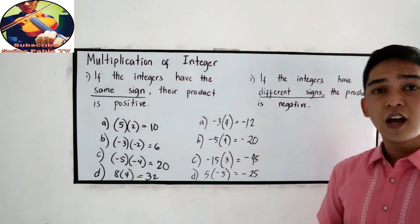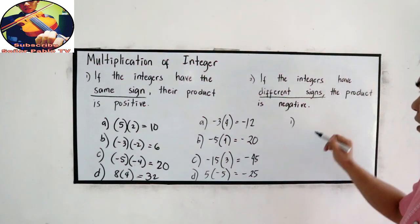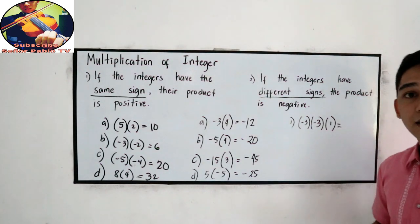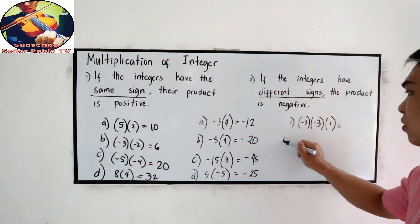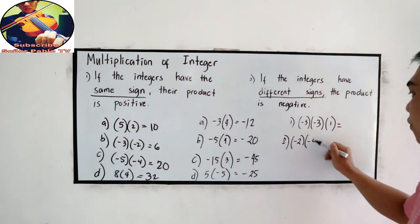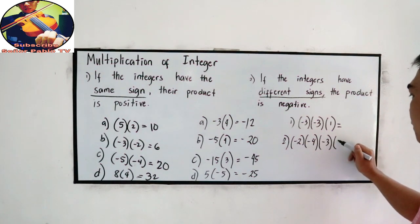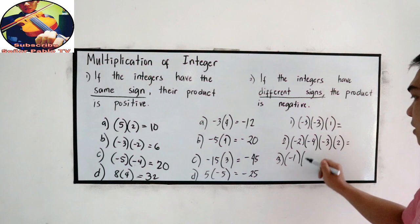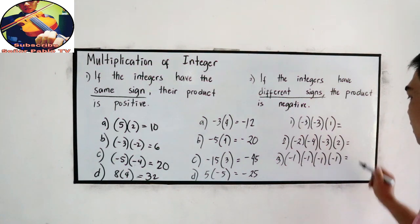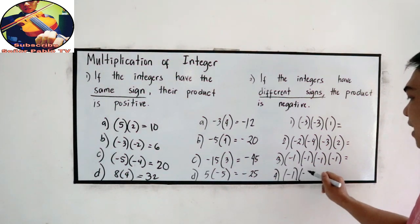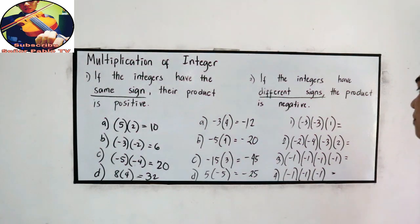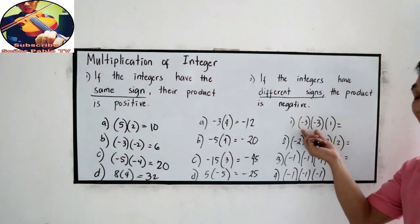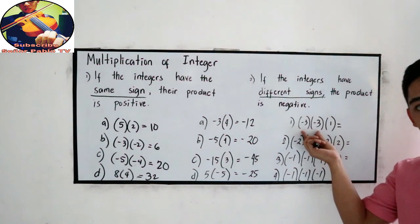What if we have more than two integers? For example: negative 3 times negative 3 times 1. How about negative 2 times negative 4 times negative 3 times 2? Number 3: negative 1 times negative 1 times negative 1. And number 4: negative 1 times negative 1 times negative 1 times negative 1. Our technique: if the number of negative signs is odd, the answer is negative.